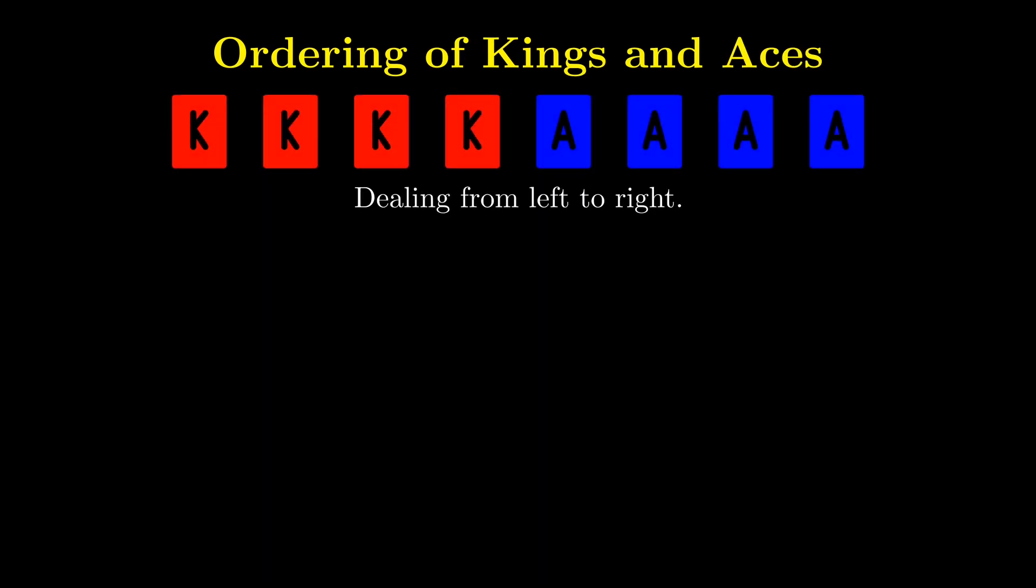To solve this problem, we first consider the ordering of kings and aces. There are four kings and four aces, and we put them side by side, dealing from the left to the right. How many total arrangements are there?